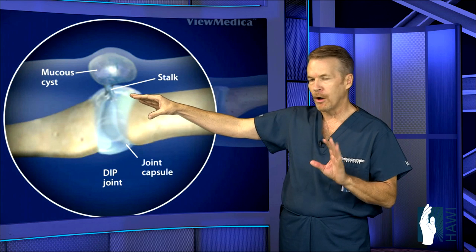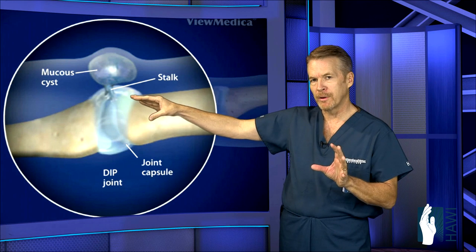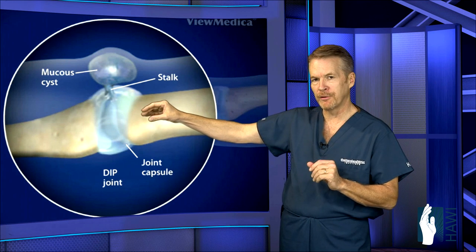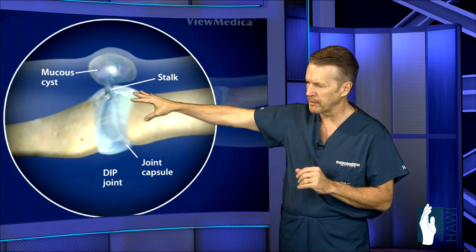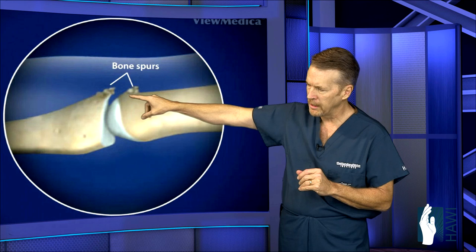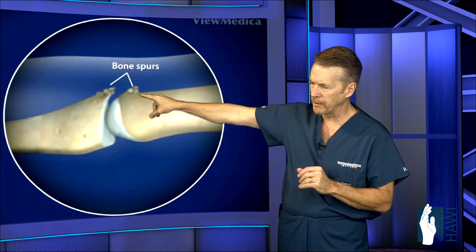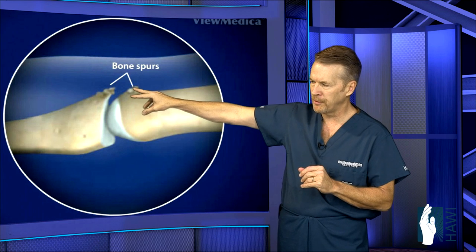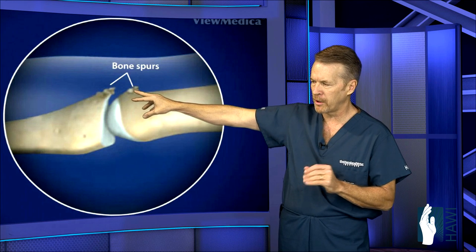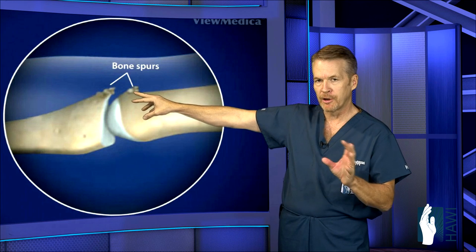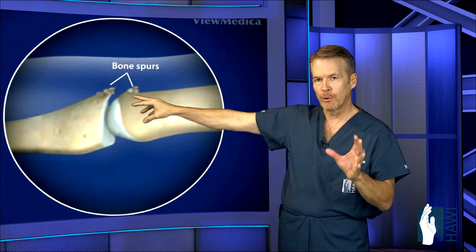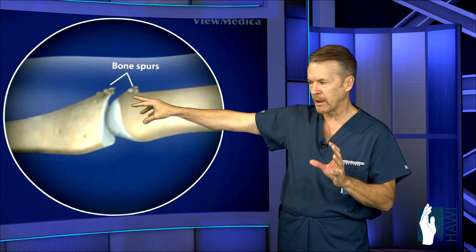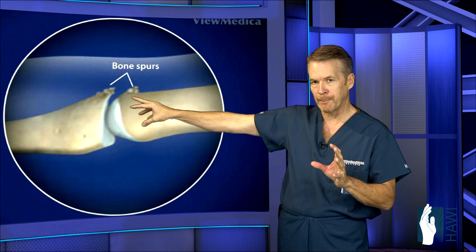Also associated with this is degenerative arthritis. Let's take a look at the bone spurs that can form right underneath the cyst. These are important — as we'll talk about in a little bit — to remove in order to lower the recurrence rate when surgery happens.